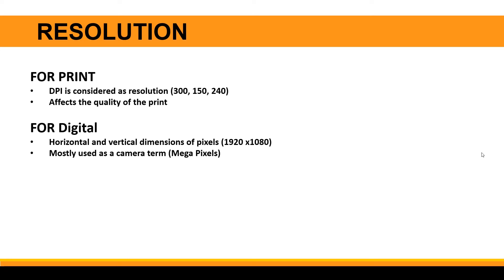For example, you might have heard 300 DPI, 150 DPI, or 240 DPI if you're familiar with different platforms. The most important thing is that DPI affects print quality — the lower the DPI, the lower the quality of the print, and the higher the DPI, the sharper the print will be.